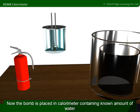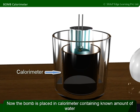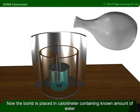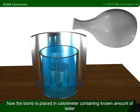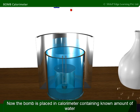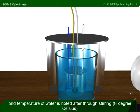Now, the bomb is placed in a calorimeter containing a known amount of water, and the temperature of water is noted after thorough stirring, i.e., T1 degrees Celsius.